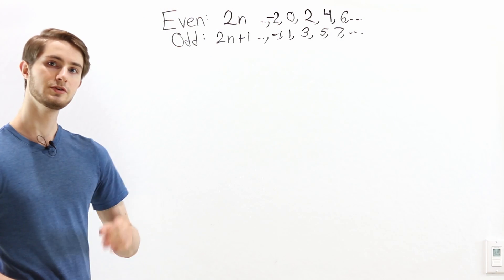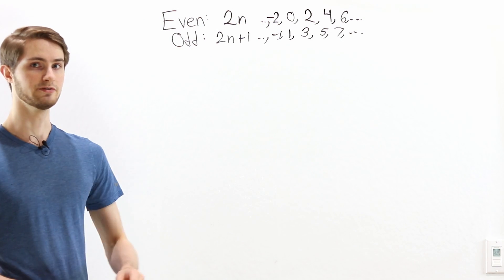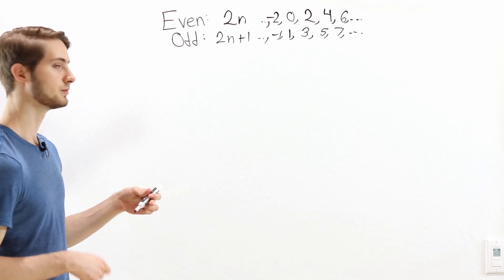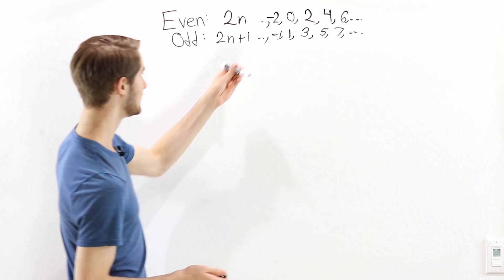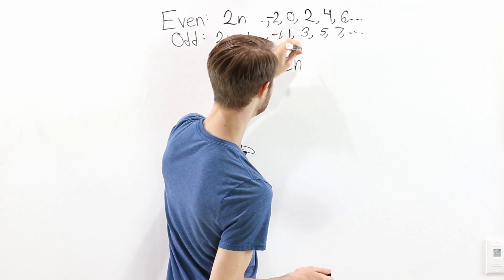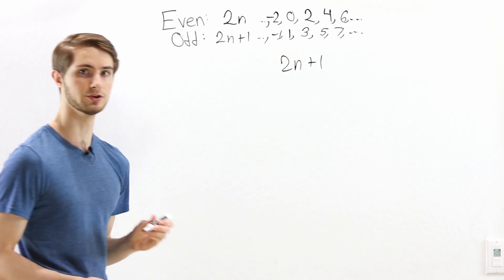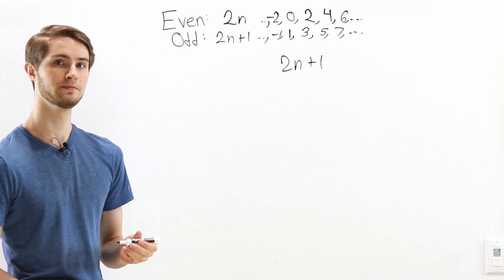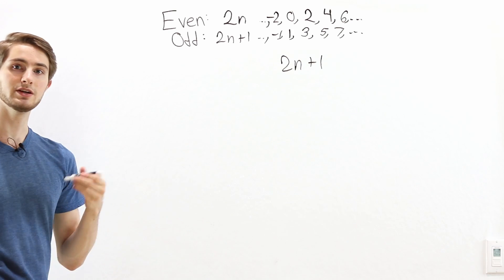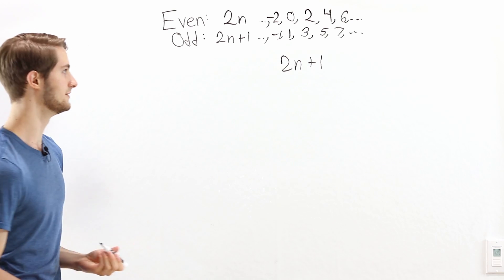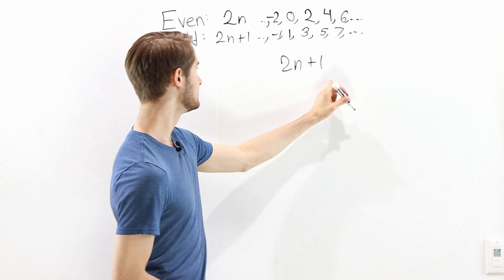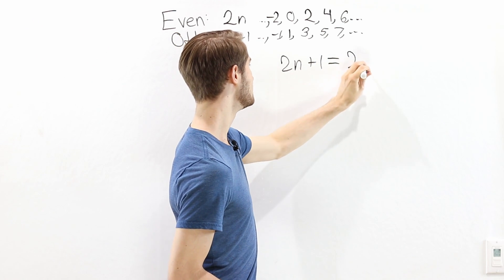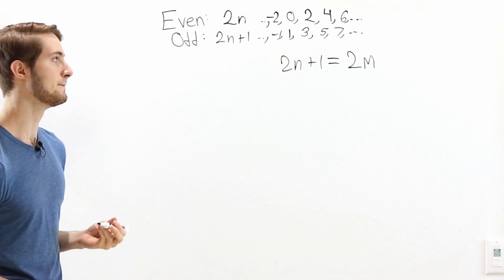So we want to prove that odd numbers are not even. Let's suppose we have some odd number. We know because it's odd it can be written as 2 times n plus 1 for some whole number n. We want to show that this number is not even. What would happen if it was even? Well, if this number is even, by definition that means it can be written as 2 times some whole number — we'll call it m.